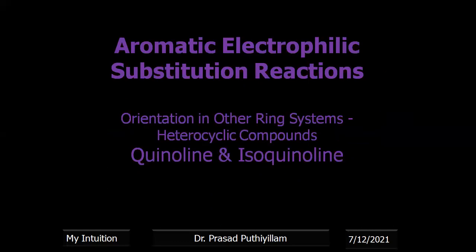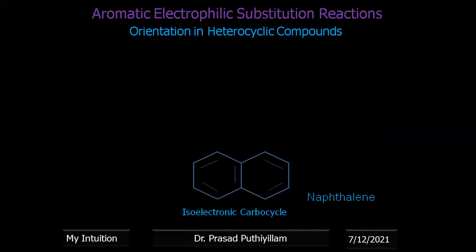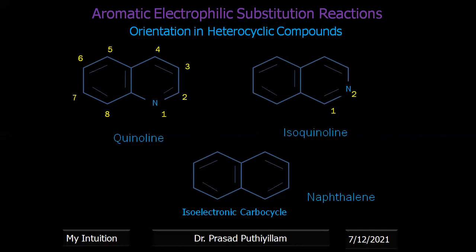Now two more heterocyclic rings: quinoline and isoquinoline. They are fused heterocyclic compounds similar to naphthalene — naphthalene is the isoelectronic carbocycle for quinoline. The numbering for quinoline goes 1 through 8, with the fused carbons called 4A and 8A. Isoquinoline has the same structure but nitrogen is at position 2, not position 1.